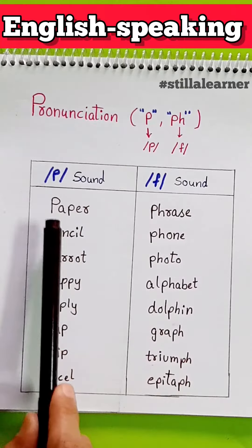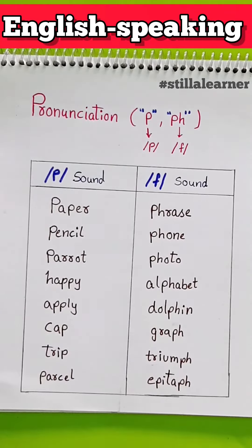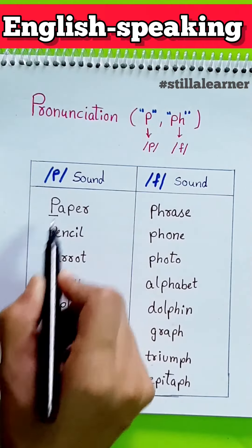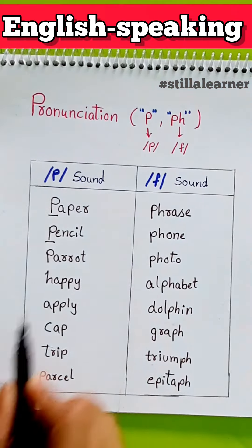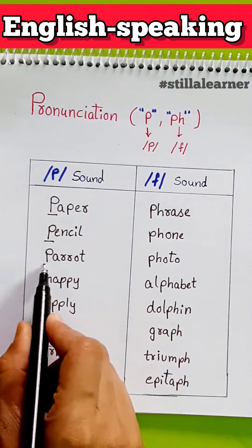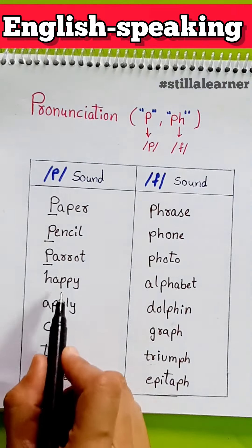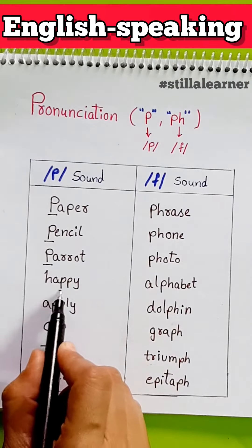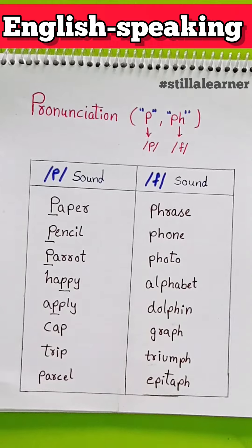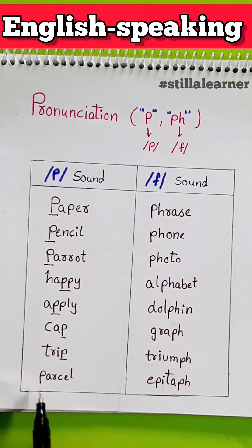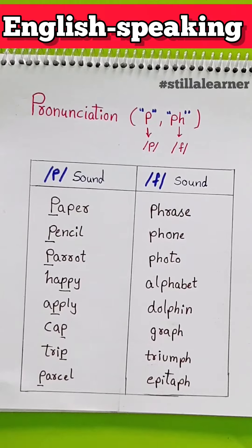P sound for paper. Here P — paper, pencil, parrot, happy, apply, cap, trip, parcel.